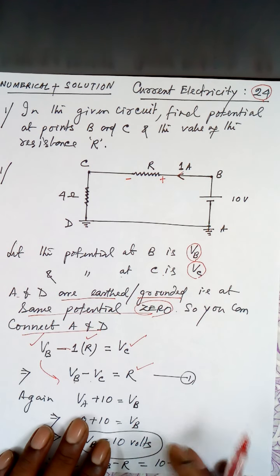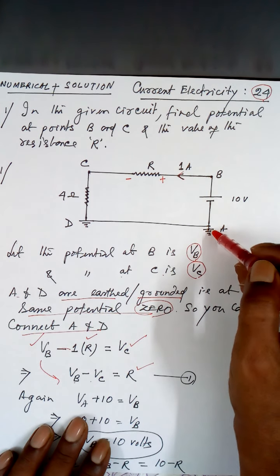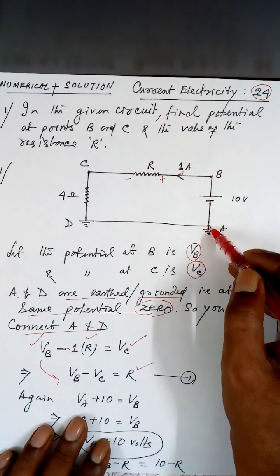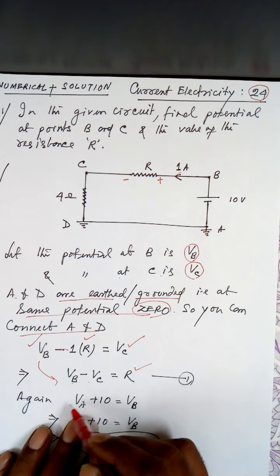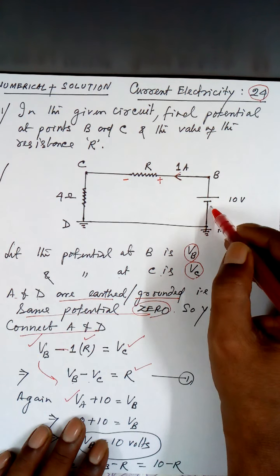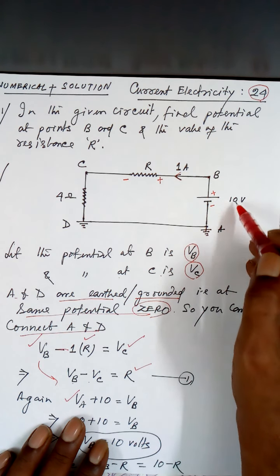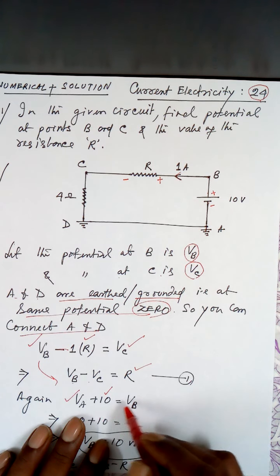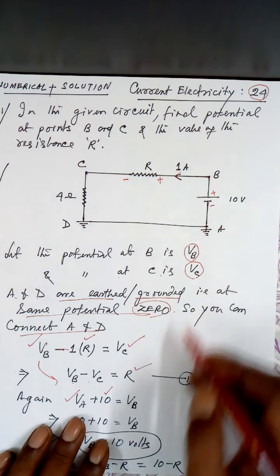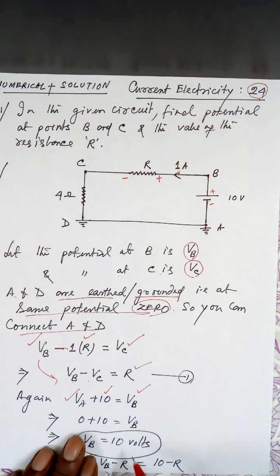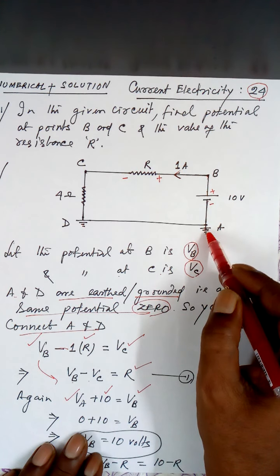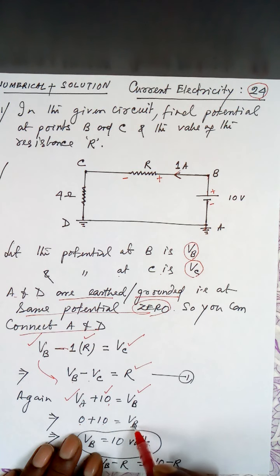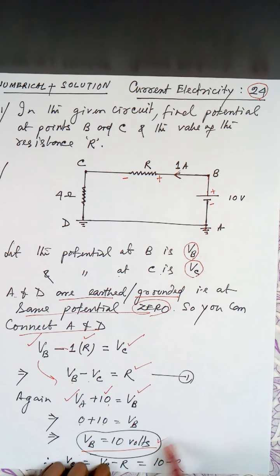Now let us go from A to B. The potential here is VA. The cell is negative-positive, 10 volts — going from here to here is plus 10 — and I arrive at B, that is VB. Since this end is connected to earth at zero potential, VA is zero. So zero plus 10 equals VB, meaning VB is equal to 10 volts.